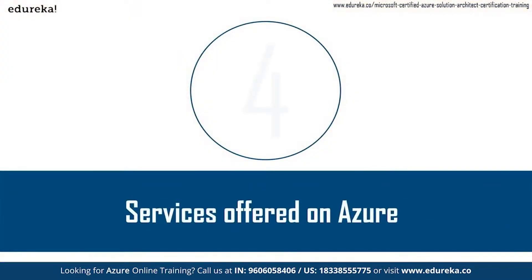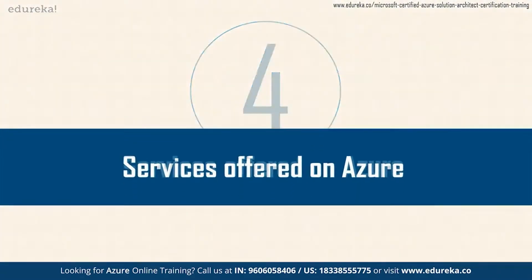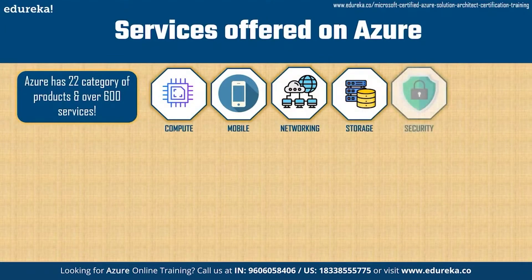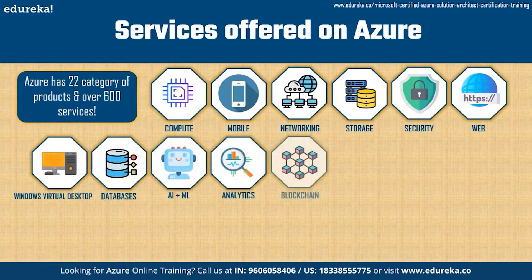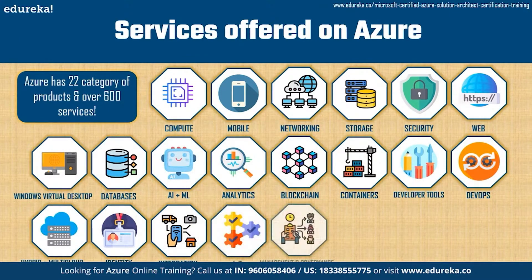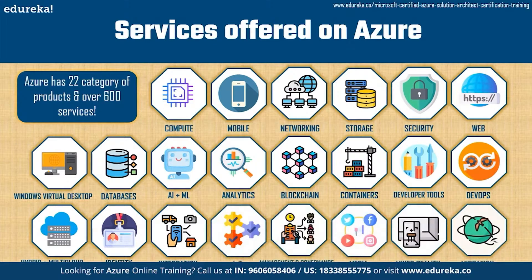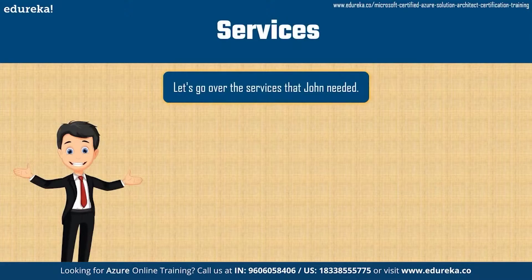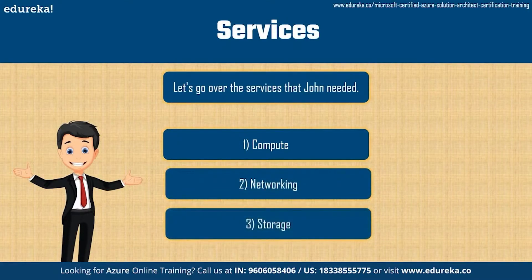Azure has 22 categories of products and over 600 services. We won't be able to cover all 600, so the homework is to go to Azure's website and check out each category. If you have questions, comment below and we'll be happy to answer. John specifically needed three services: compute, networking, and storage — so let's take a look at each of these in a bit of detail.